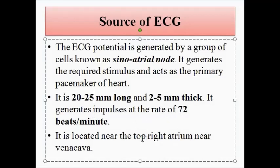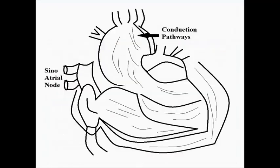The sinoatrial node is located at the top right atrium near the vena cava. We must just understand that it is located at the top right corner of the human heart. It produces the required stimulus at the rate of 72 beats per minute, which causes migration of ions — particularly the cations and anions: sodium Na+, potassium K+, and chloride Cl− — which produces the electric potential.